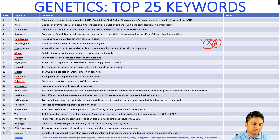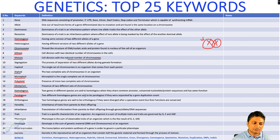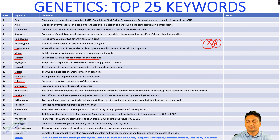The seventeenth keyword is paralogous. Paralogous means two different homologous genes that were separated by a gene duplication event. The eighteenth keyword is orthologous — two homologous genes are orthologous if they diverged after a speciation event but their functions remain the same.